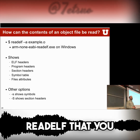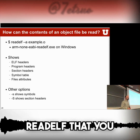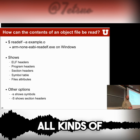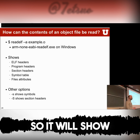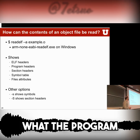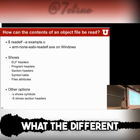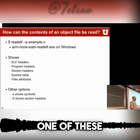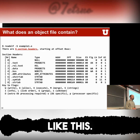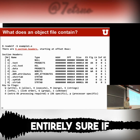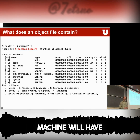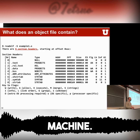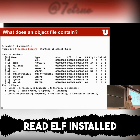There's a small application called readelf that you can use to look at the ELF format. It will output all kinds of different information — it will show you what the headers are, what the program headers are, what the different sections are, symbol tables, file attributes, etc. I'm not entirely sure if Windows machines will have readelf, but if not, go to a Linux machine — most of them have readelf installed.